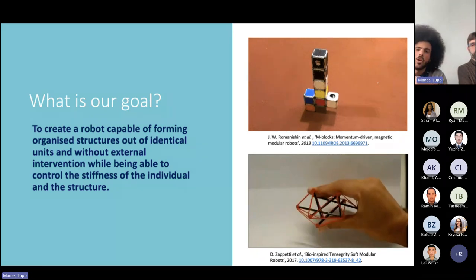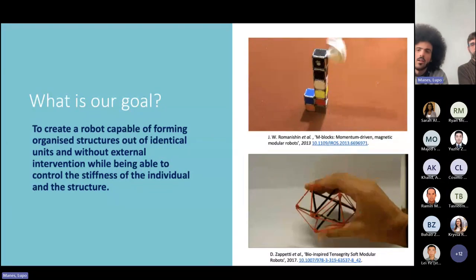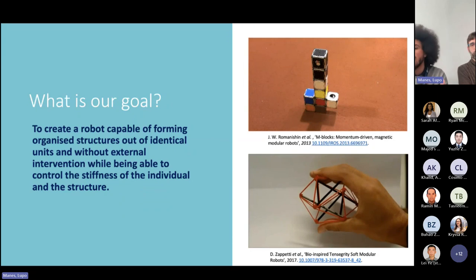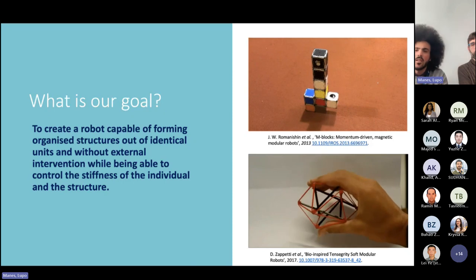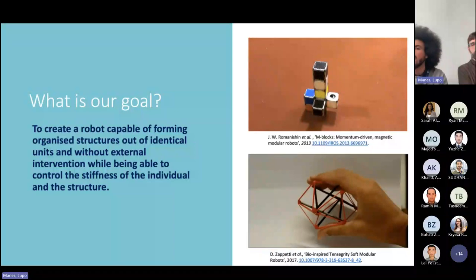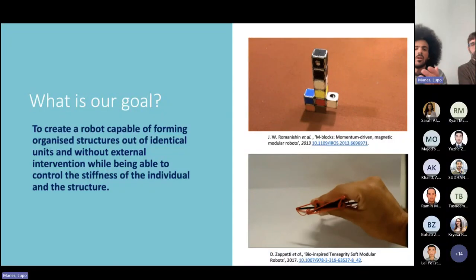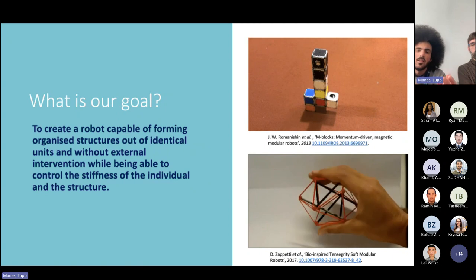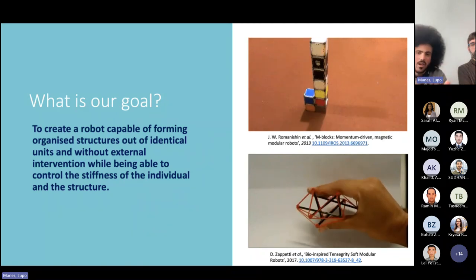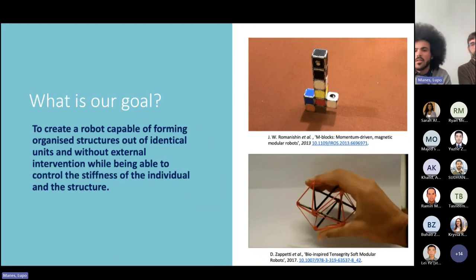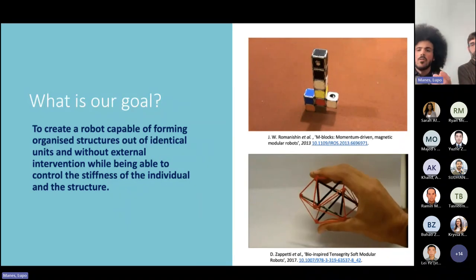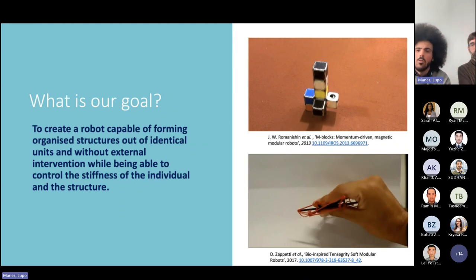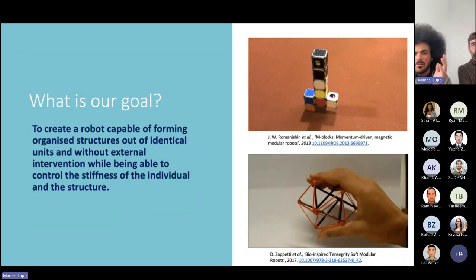Those are the two properties that more commonly define the objects we can interact with. For example, the only difference between a bench and a mattress or bed would be that one is soft while the other is rigid. So if we can adjust not only the shape but the stiffness as well, we can basically create more or less anything very quickly.